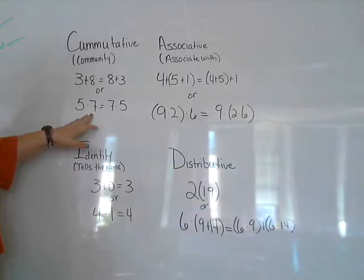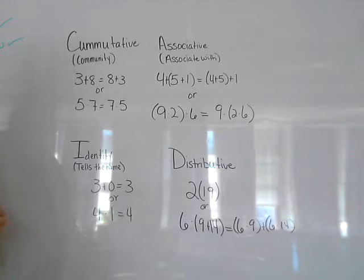Or in this case with multiplication, 5 times 7 will equal the same as 7 times 5. It doesn't matter what order you put them in.